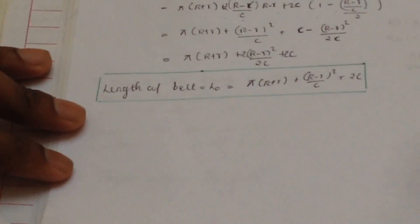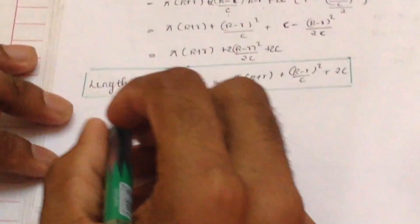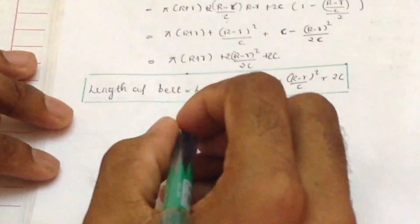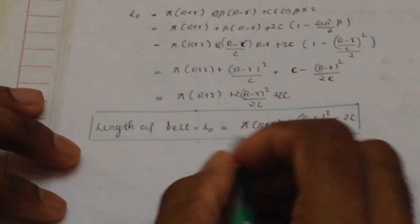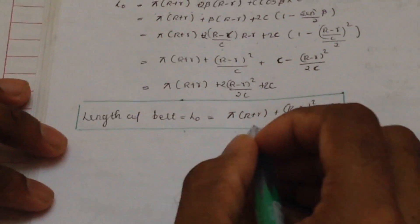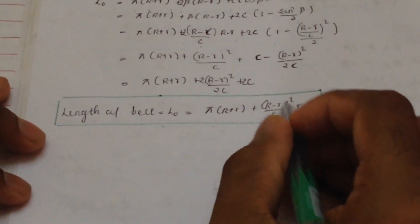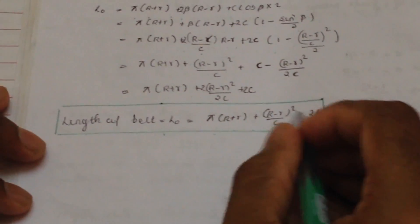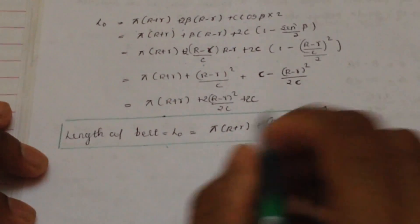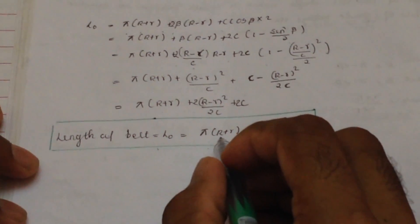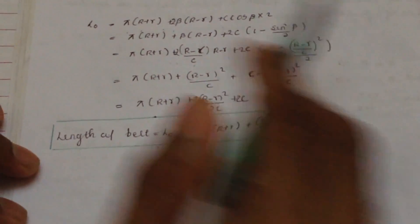Canceling small higher-order terms, the length of belt for an open belt drive is: L₀ = π(R + r) + (R − r)²/C + 2C, where capital R is the radius of the larger pulley and small r is the radius of the smaller pulley.